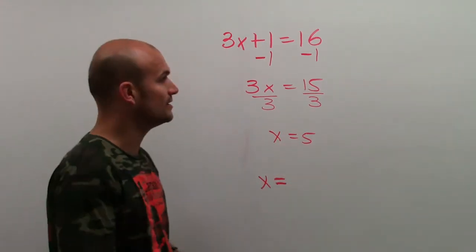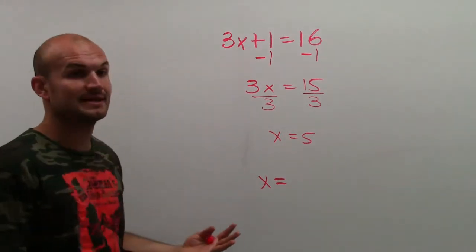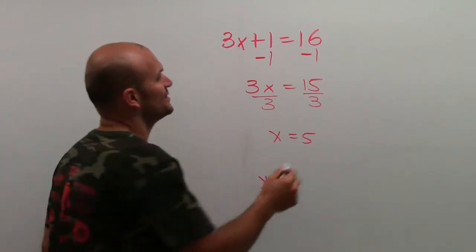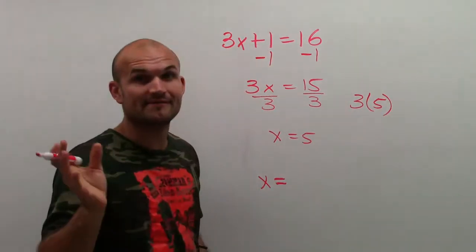So that is our solution. And if you did that in your head, you might have got that same answer. Now, the next thing is we can always just go and check our answer just to make sure we're doing everything good. So what I'll do is I'll just plug in, or what we call evaluate, 3 times 5 plus 1 equals 16.